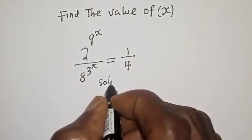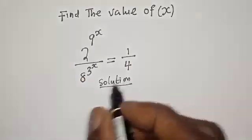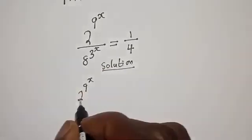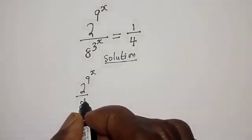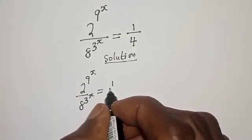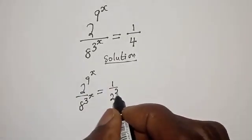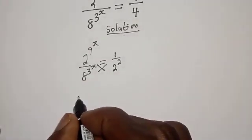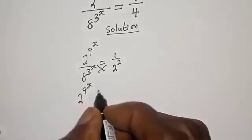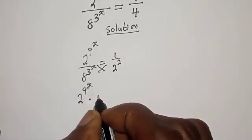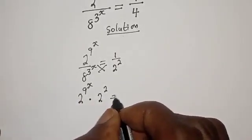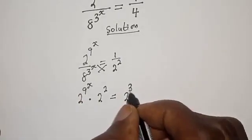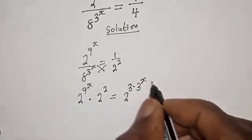Solution. We have 2 raised to power 9 raised to power s, over 8 raised to power 3 raised to power s, is equal to 1 over 4, which can be written as 2 raised to power negative 2. Then let's cross multiply. This gives 2 raised to power 9 raised to power s, multiplied by 2 raised to power 2, is equal to 8 raised to power 3 raised to power s, which can be written as 2 raised to power 3, multiplied by 3 raised to power s.